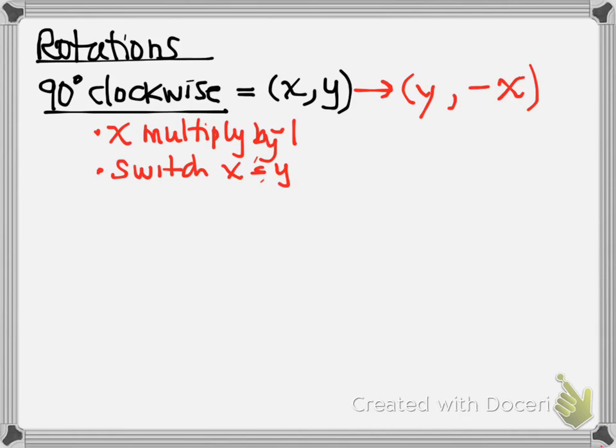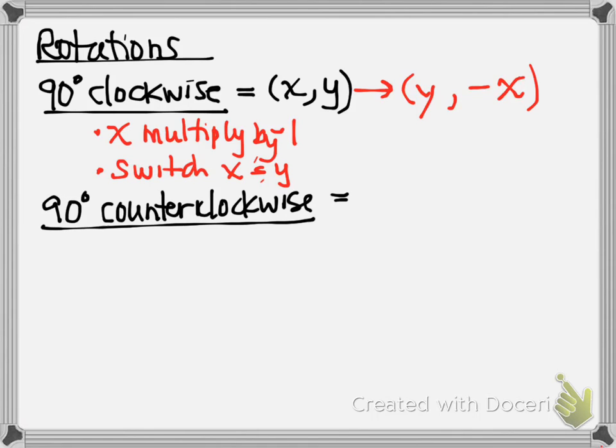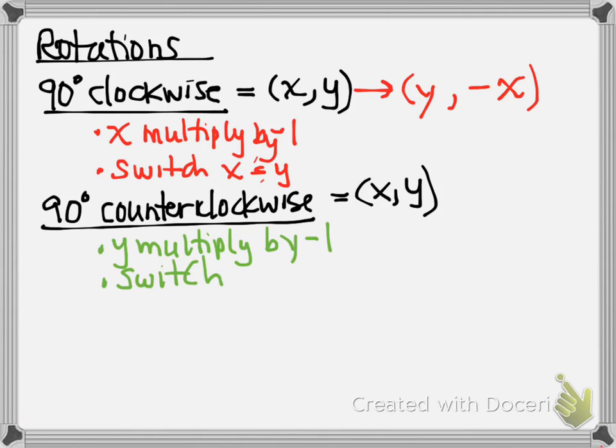Let's go the other direction. 90 degrees counterclockwise. Now, again, all of these, we're going to counterclockwise. We're going to be using the origin as our rotation point. So again, we're going to start with this ordered pair. What do you think we're going to multiply by negative one? We're going to multiply the Y by negative one. And we're still going to do the switching. Switch X and Y. So this, when I rotate it counterclockwise to the left, we're going to multiply the Y by negative one and it now becomes the X value and the old X value becomes the new Y value.